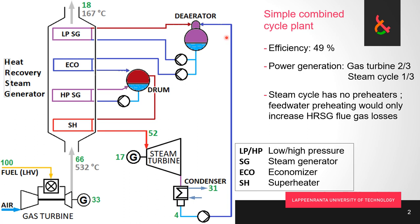The other thing we notice is that in the steam cycle we have no low pressure or high pressure preheaters. We have only the deaerator, and even that looks a little unusual — we have no steam extraction. Instead, we have a separate low pressure steam generator circuit where we take water from the deaerator, produce steam at low pressure, and use that steam to maintain the saturated state in the deaerator.